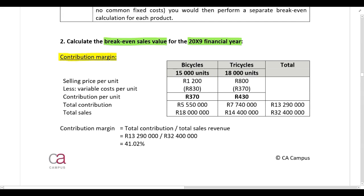Remember, the contribution margin is contribution divided by sales. Because the company sells two different products, you need to calculate this in total. First, calculate total contribution: take the contribution per unit for each product and multiply by the number of units to get the total contribution, then do the same for tricycles.